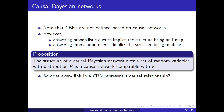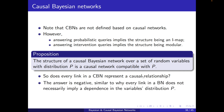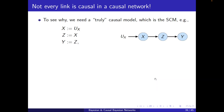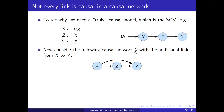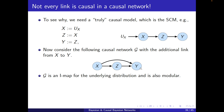Does every link in a causal Bayesian network represent a causal relationship? The answer is negative, similar to why every link in a Bayesian network does not necessarily imply a dependence in the variable's distribution P. To see why we need a truly causal model, which again is an SCM. Consider an example: X causes Z directly, and Y is caused by Z. Now consider the causal network G with the additional link from X to Y. G is an IMAP for the underlying distribution and it's also modular — it immediately follows that it's an IMAP because it's a fully connected network.